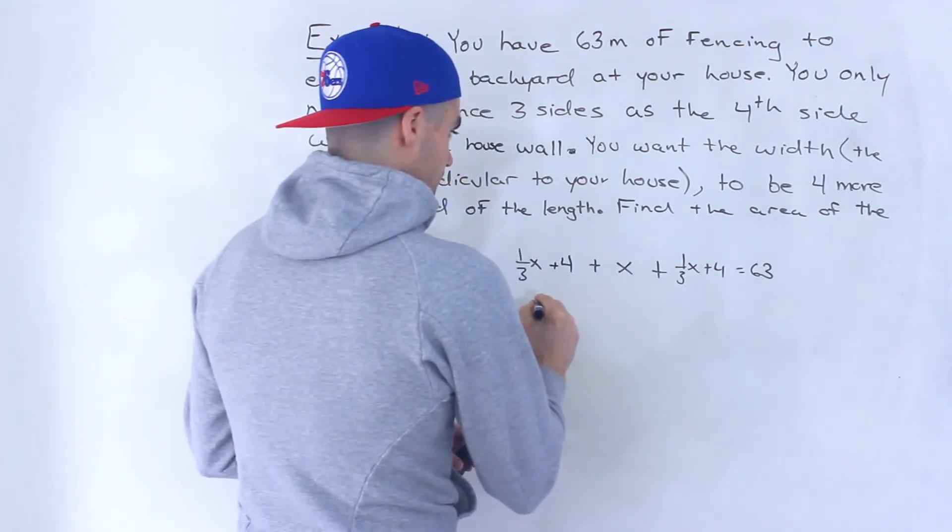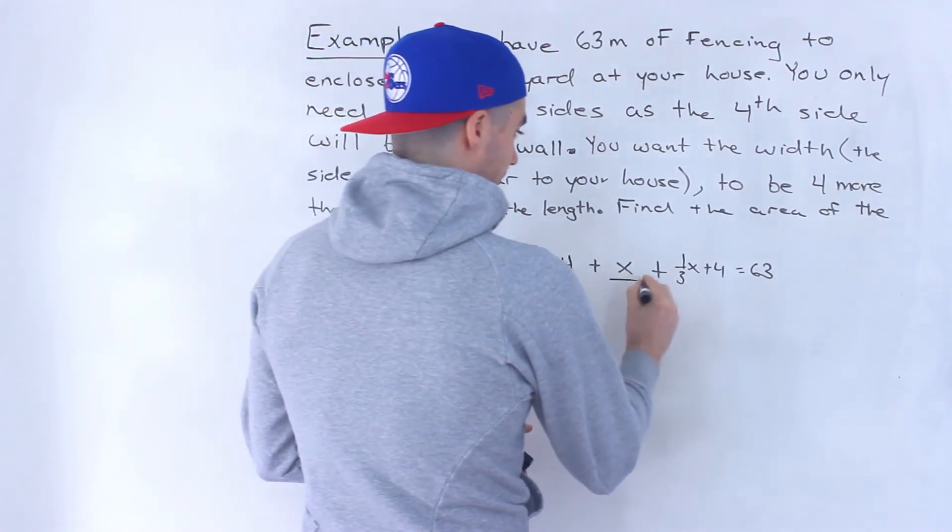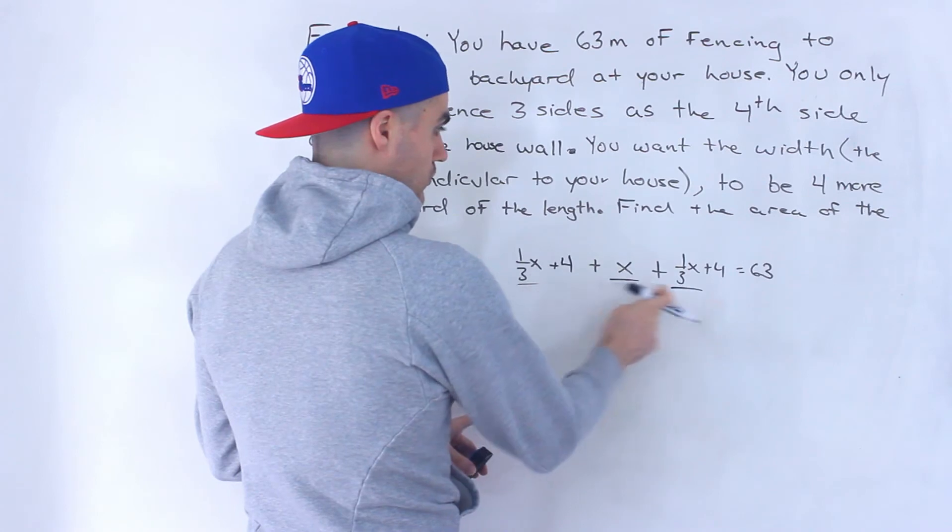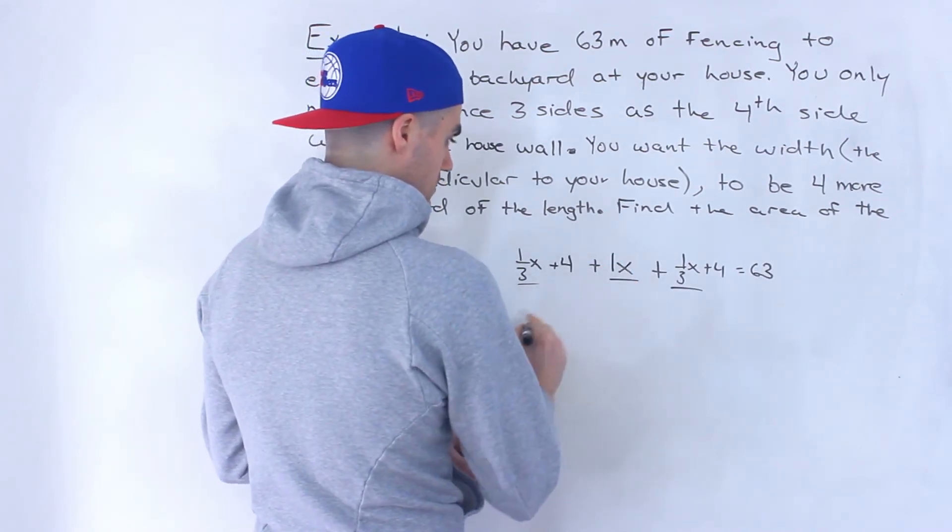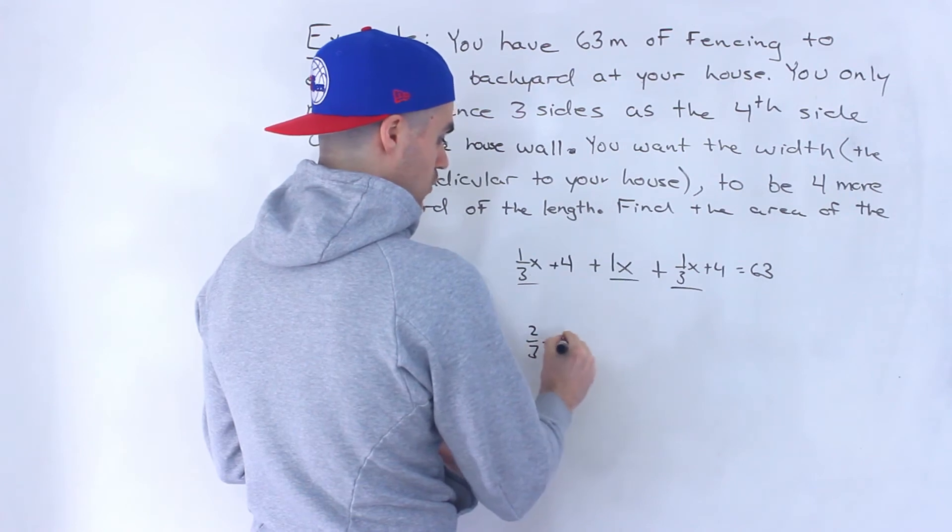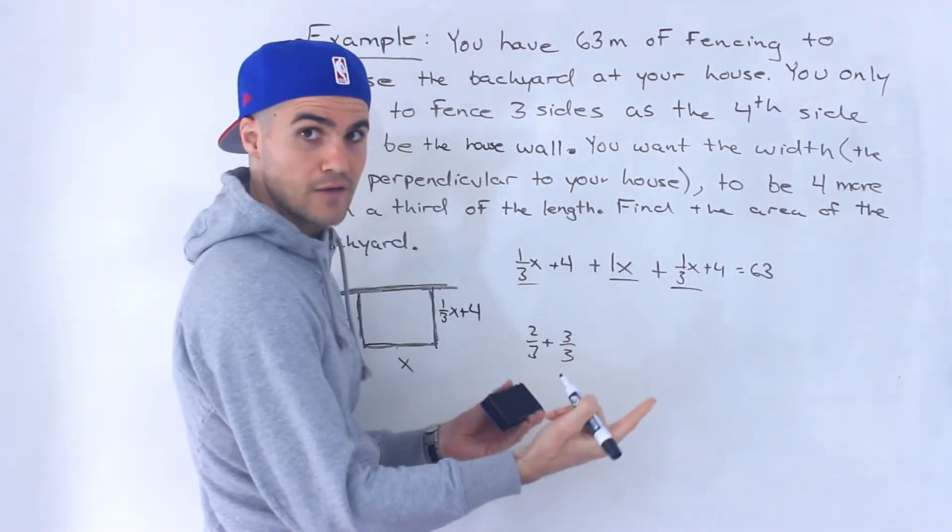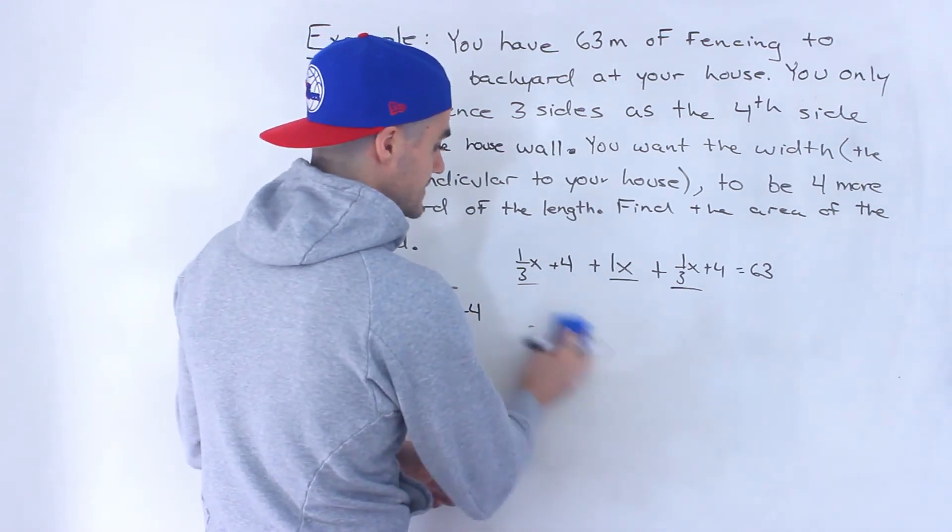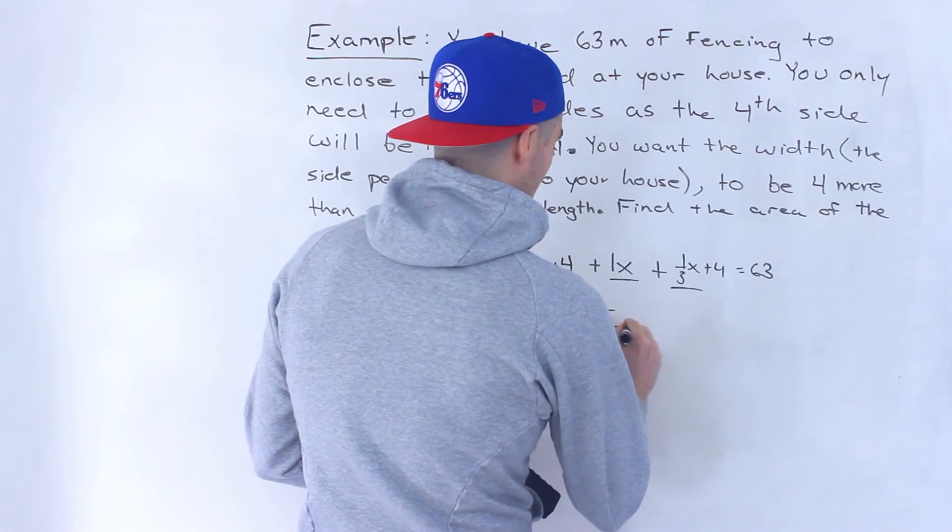So what we can do now, let's add the like terms. So we would have one over three plus one over three, which is two over three plus there's like a one here. So two over three plus one is like plus three over three, which would give us five over three. So on this left side, we would end up with five over three x.